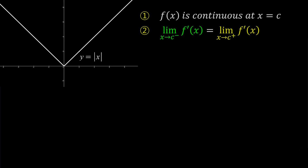Now let's consider the modulus graph. To make f of x differentiable, we need to fulfill two conditions. This graph allows us to draw the curve without lifting the pen from the left to the right, indicating continuity. Therefore, it satisfies the first condition.